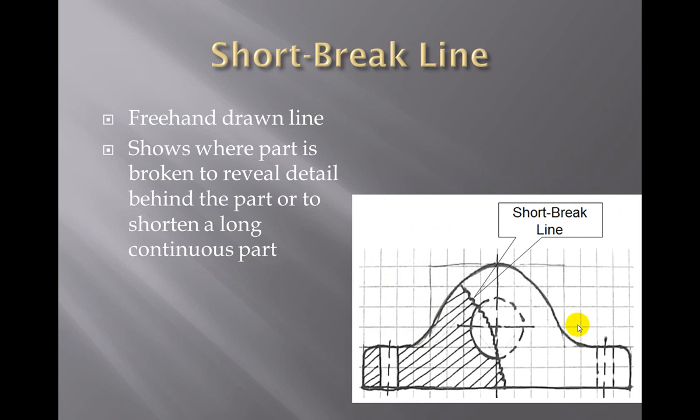A short break line is a freehand jagged line that shows where the part has been broken to reveal detail. The short break line is being used to show the edge of where the part has been cut away. The section lines show that you're looking into the part after the front of it has been removed. Your short break line is showing where we used the cut to cut away the part. It can also be used to shorten a long continuous part.